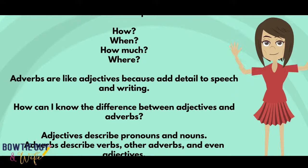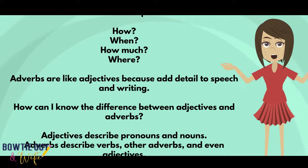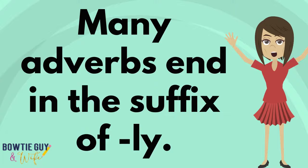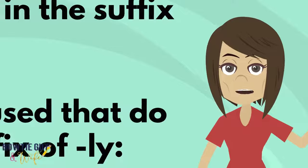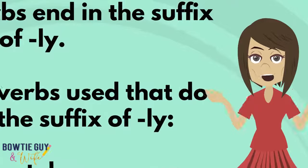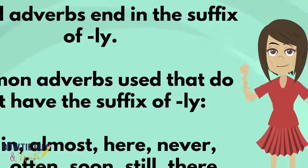Adverbs are like adjectives because they add details to speech and our writing. How can I know the difference between adverbs and adjectives? Well, adjectives describe pronouns and nouns. Adverbs describe verbs, other adverbs, and even adjectives. Many adverbs end in the suffix -ly. However, don't get too carried away looking for all adverbs ending in -ly, because not all of them do. Common adverbs that do not have the suffix -ly include again, almost, here, never, now, often, soon, still, there, and where.